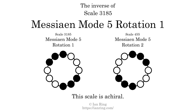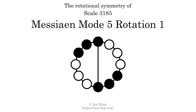The inverse of a scale is a mirror image — it is what you get when the sequence of intervals is reversed. The inverse of this scale is scale 455, also known as Messiaen Mode 5 Rotation 2. This scale is achiral, since it can transform into its own reflection by a rotational transformation. This scale has rotational symmetry at six semitones.